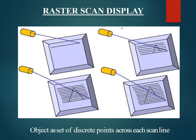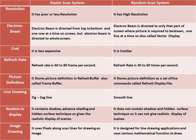There are two types of systems: raster scan and random scan. In a raster scan system, the electron beam is swept across the screen one row at a time from top to bottom, and the beam intensity is turned on and off to create illuminated spots. In random scan, the electron beam is directed only to the parts of the screen where the picture is to be drawn, rather than scanning from left to right and top to bottom. Random scan is also called vector display, stroke-writing display, or calligraphic display.